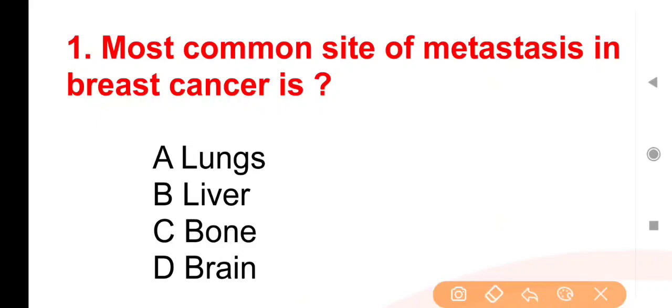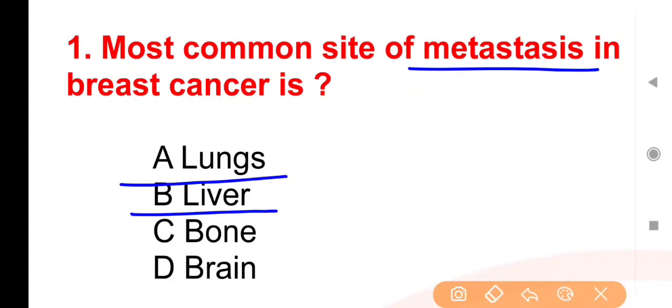First question: Most common site of metastasis in breast cancer is — breast cancer mein metastasis ki most common site kaun si hoti hai? Options are: Lungs, Liver, Bone, or Brain.